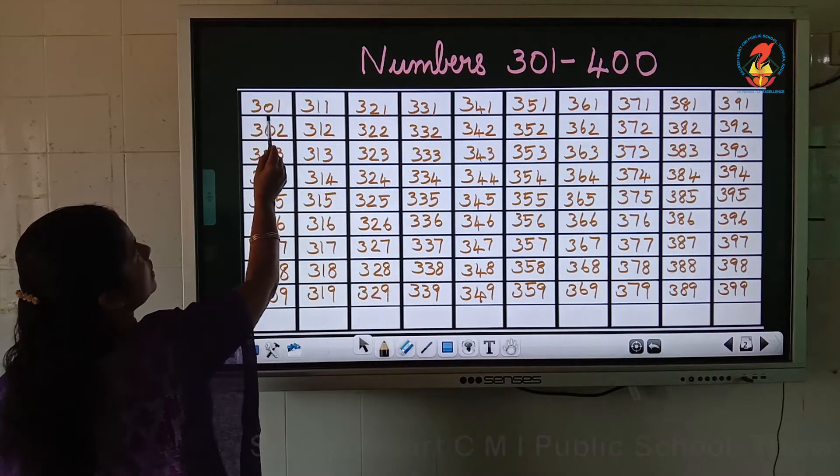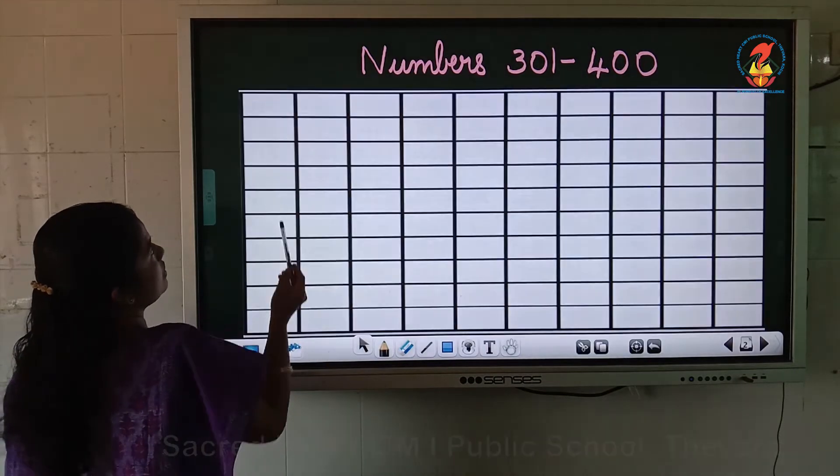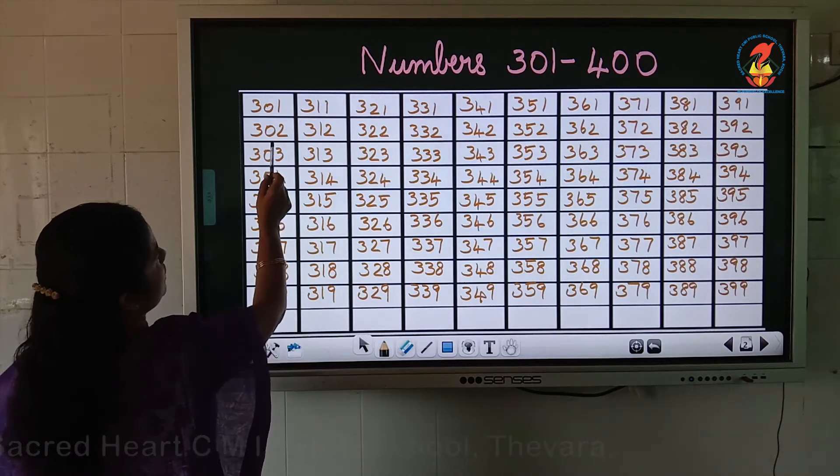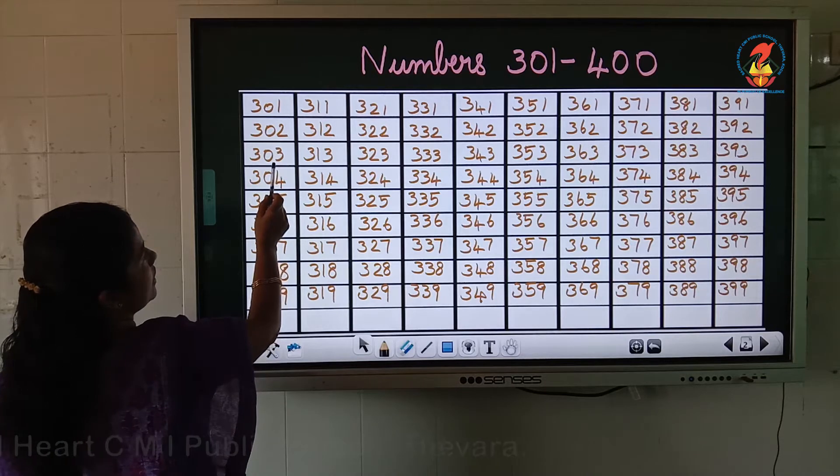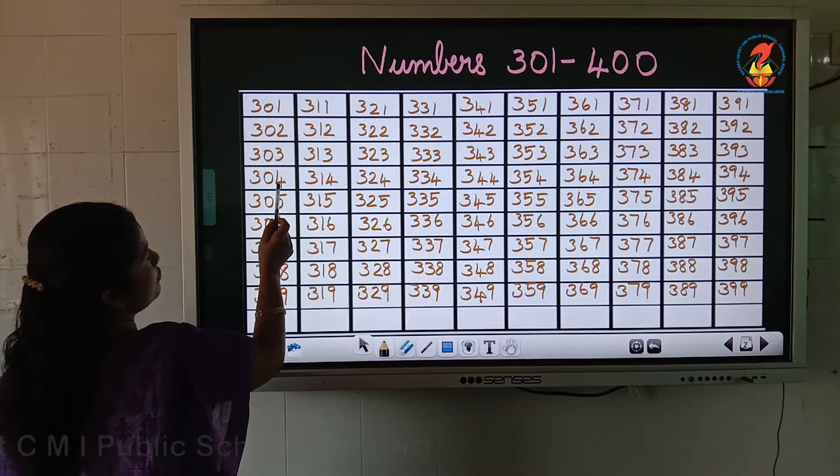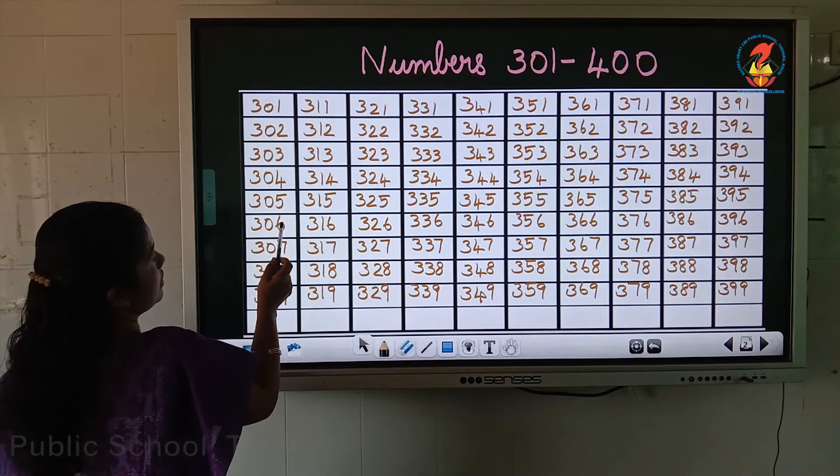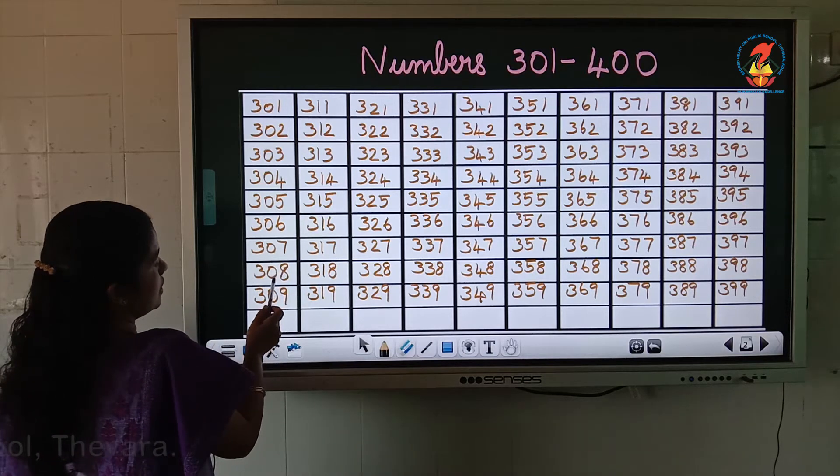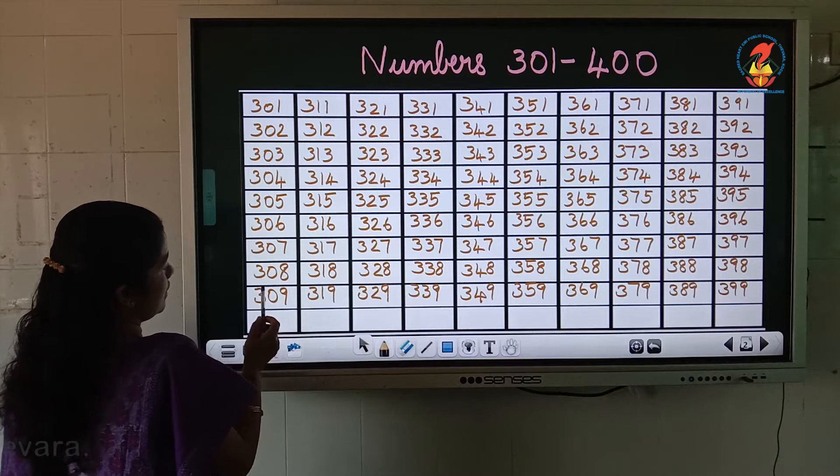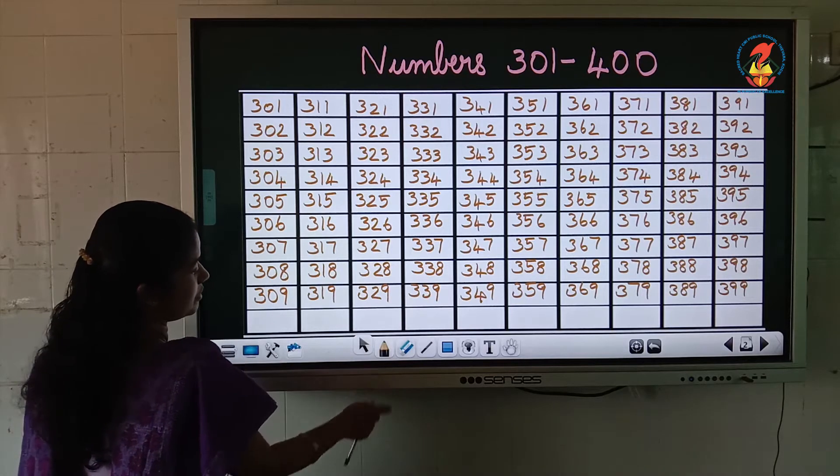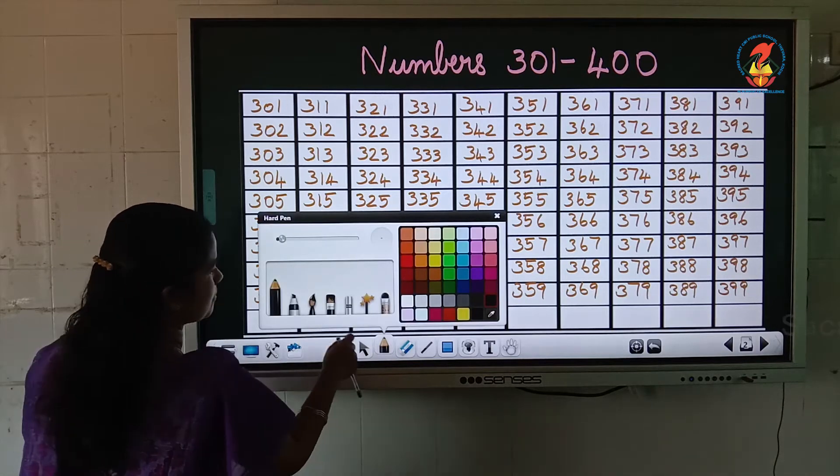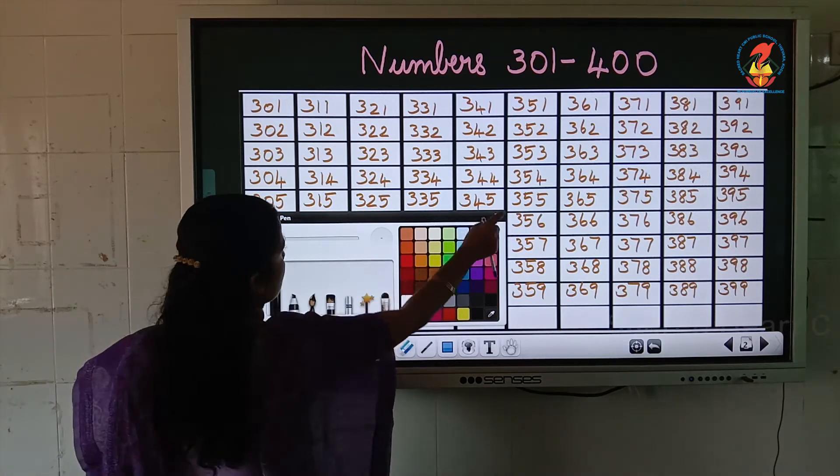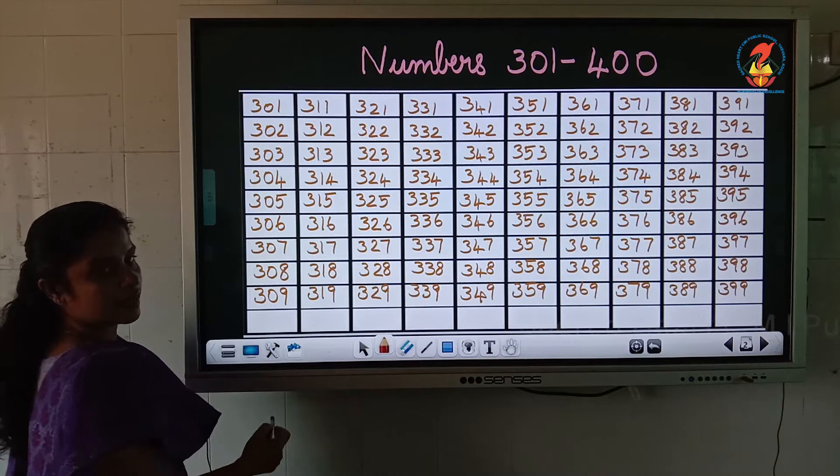What is this number? 301. After 301, 302, 303, 304, 305, 306, 307, 308, 309. What comes after 309? 310.